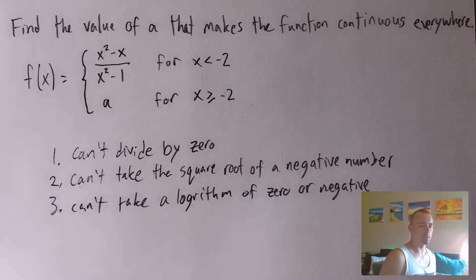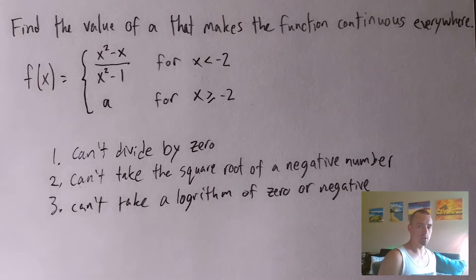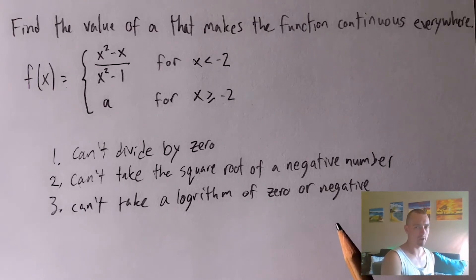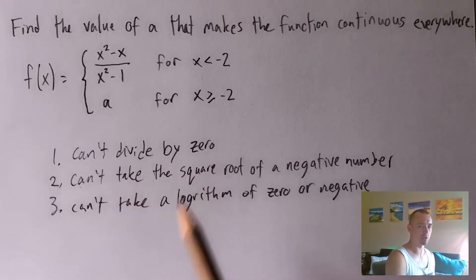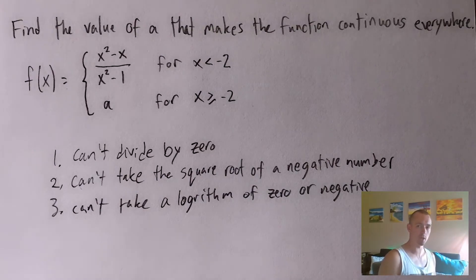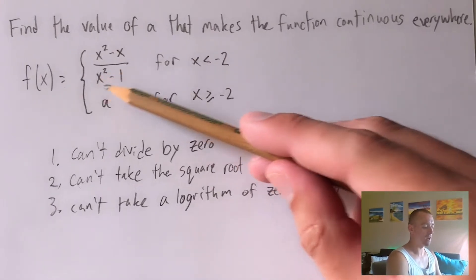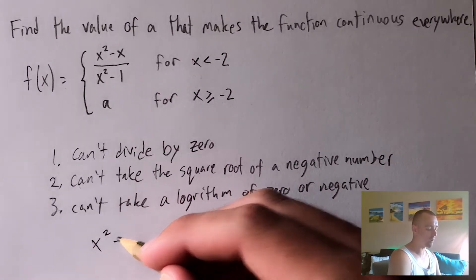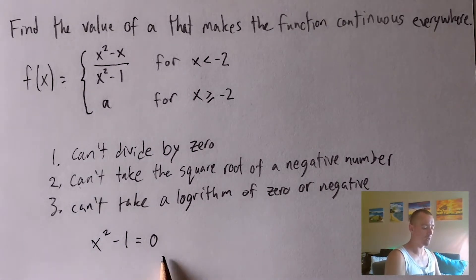In an actual example, if you had a function with a square root or a logarithm, you'd need to make sure whatever is within them meets those conditions. In this case, we only have a fraction — no square root, no logarithm — so all we need to ensure is we don't divide by zero. That means we can't have the denominator equal zero, so we figure out what values of X make our denominator equal zero.